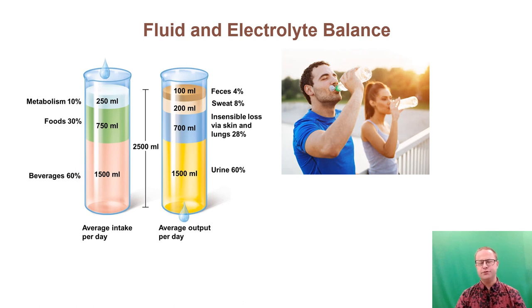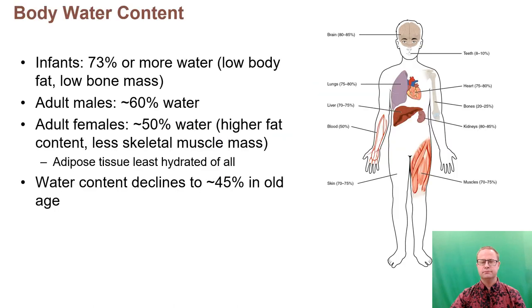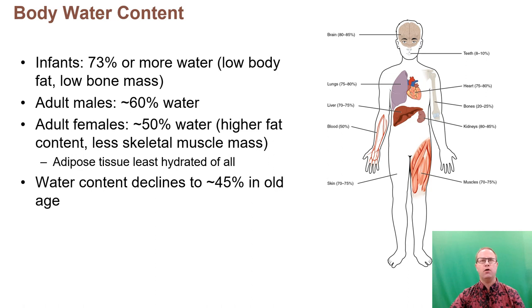Hello, Physiology 142 students. Welcome to the lecture on fluid and electrolyte balance. You've probably heard it said before that humans are primarily water, and that's correct. The human body varies somewhere between 45% and 73% water, and it depends both on age and gender.